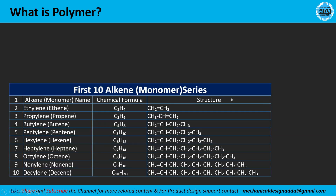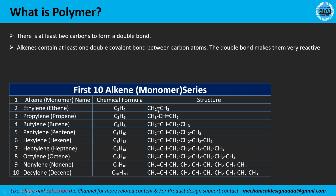Here you can see the first 10 alkenes, which are the monomers. We have ethane, ethylene with its formula and structure, propylene with its chemical formula and structure, and so on. At least two carbon atoms are needed to form the double bond. This double bond is very important to give high reactiveness in chemical reactions. Alkenes contain at least one double covalent bond between carbon atoms, making them very reactive in the chemical bonding process.